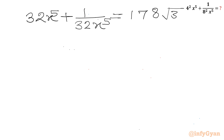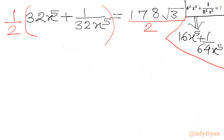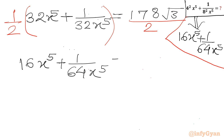Now our required expression is 16x⁵ + 1 over 64x⁵. So I need to divide both sides by 2. Dividing both sides by 2: the LHS becomes 16x⁵ + 1 over 64x⁵, which is our required expression, and the RHS is 178 over 2. So it equals 89√3.